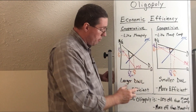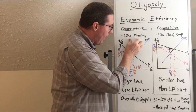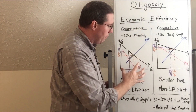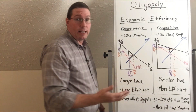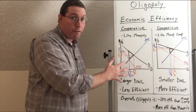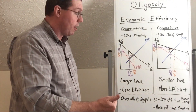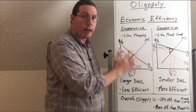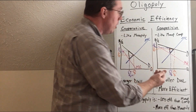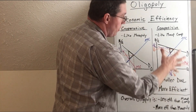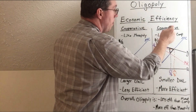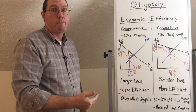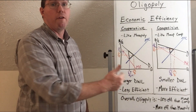Because on the cooperative side they behave more like a monopoly, there's a larger deadweight loss — making cooperative oligopoly less economically efficient. It's better for the firms but not for consumers. This is one of the reasons why the government gets involved and imposes antitrust laws and regulations. On the competitive side, there's a smaller deadweight loss, meaning competing oligopoly firms produce a more economically efficient market that provides more utility per dollar for consumers.